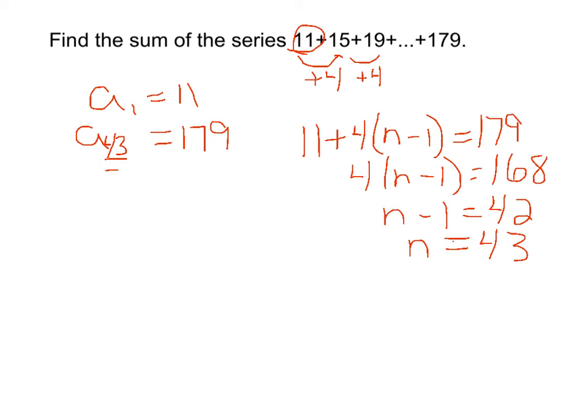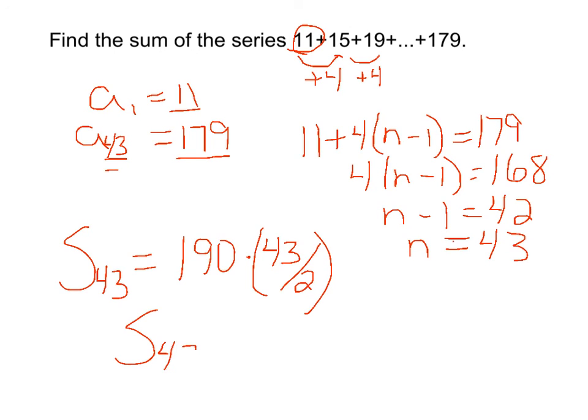Now, to find the sum of those 43 terms, we're going to add the first and last term. Well, 11 plus 179 is 190. And we're going to multiply that times half the number of terms. Well, if there are 43 terms, we're going to multiply that by 43 over 2. And that will give us the sum of the first 43 terms in this series, which is equal to 4,085.